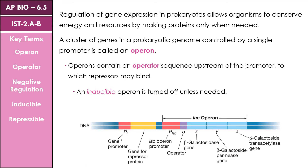We'll start with an inducible operon — that is an operon that can be activated. An inducible operon is turned off unless it is needed. Compare that to a repressible operon — an operon that is able to be turned off — a repressible operon is turned on unless it is not needed. We're going to take a look at the two main types of operons, each an example of these inducible and repressible systems.